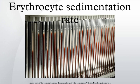To perform the test, anticoagulated blood was traditionally placed in an upright tube known as a Westergren tube, and the rate at which the red blood cells fall was measured and reported in millimetres per hour. Since the introduction of automated analyzers into the clinical laboratory, the ESR test has been automatically performed.